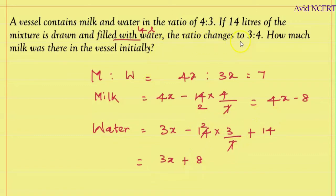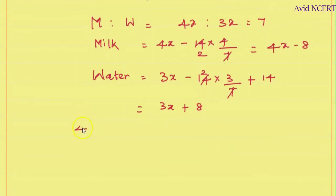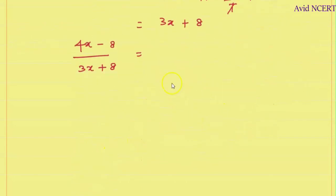Now the ratio changes to 3:4, which is milk to water. So 4x minus 8 divided by 3x plus 8 equals 3/4.